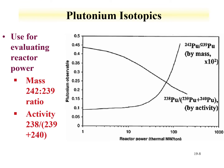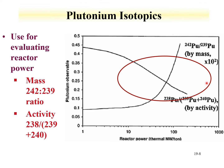Reactor power can also be evaluated through plutonium isotopics, again using the Pu-242/Pu-239 mass ratio and the activity ratio of Pu-238 divided by (Pu-239 + Pu-240). For low reactor power, the variation is much greater for the activity ratios than for the mass ratios. Going from 10 megawatts per ton up to a few hundred megawatts per ton, there is a pronounced regime change where both ratios provide tools for determining reactor power, which in turn gives an idea of what reactor was used to produce these plutonium samples.